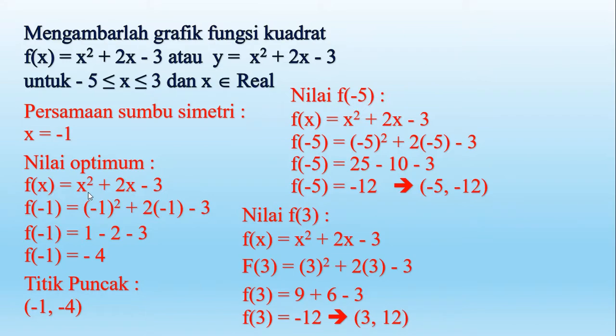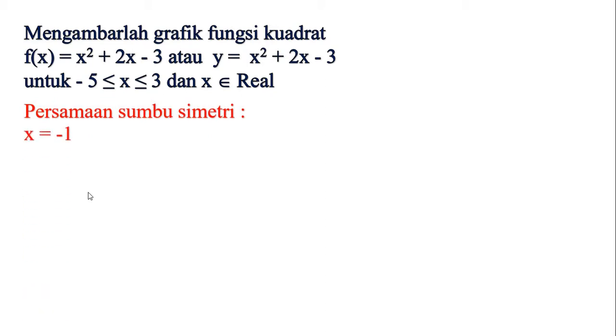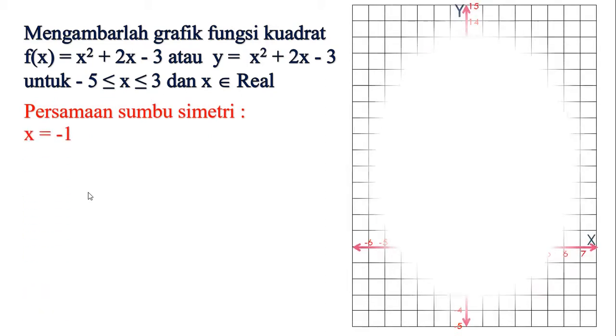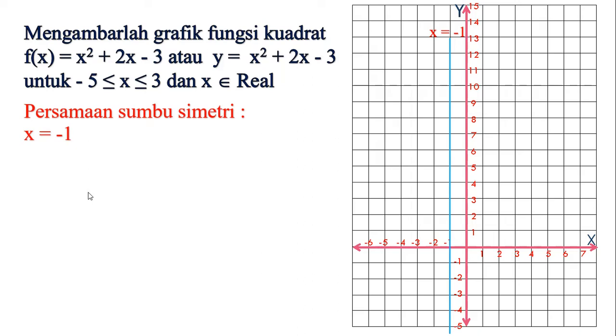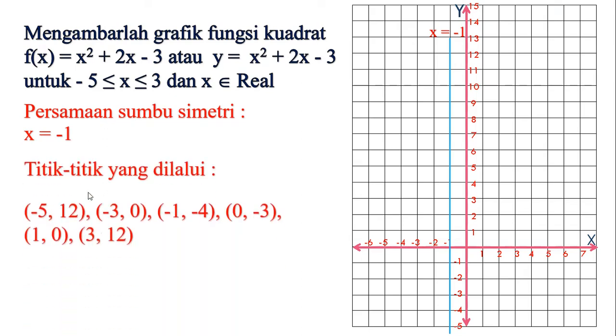Sekarang kita ingat persamaan sumbu simetrinya tadi x sama dengan negatif 1. Kita gambarkan dalam koordinat, garis x sama dengan negatif 1 ya, perhatikan garis warna biru kita beri nama x sama dengan negatif 1. Maka grafiknya nanti akan simetris terhadap garis itu. Titik-titik yang dilalui di antaranya tadi adalah (-5, 12), kemudian (-3, 0), kemudian (-1, -4) seperti ke puncaknya, titik potong sumbu y yaitu (0, -3), kemudian titik potong sumbu x yang satunya yaitu (1, 0), kemudian titik pada ujung grafik itu adalah (3, 12). Kemudian kita hubungkan, nah maka grafiknya akan sama dengan yang dibuat tabel tadi.